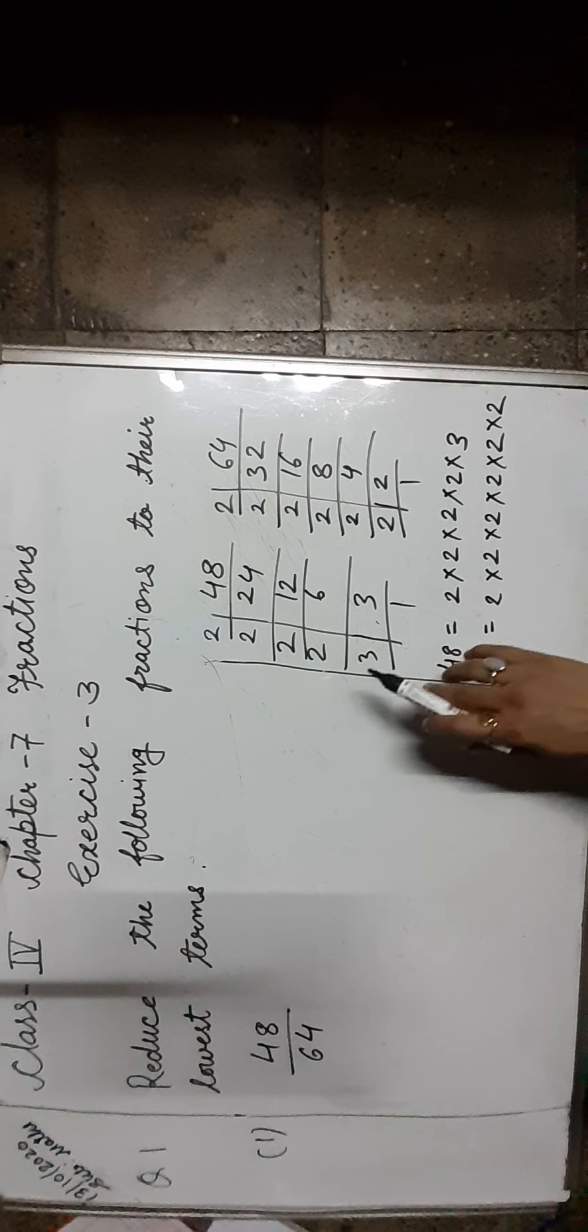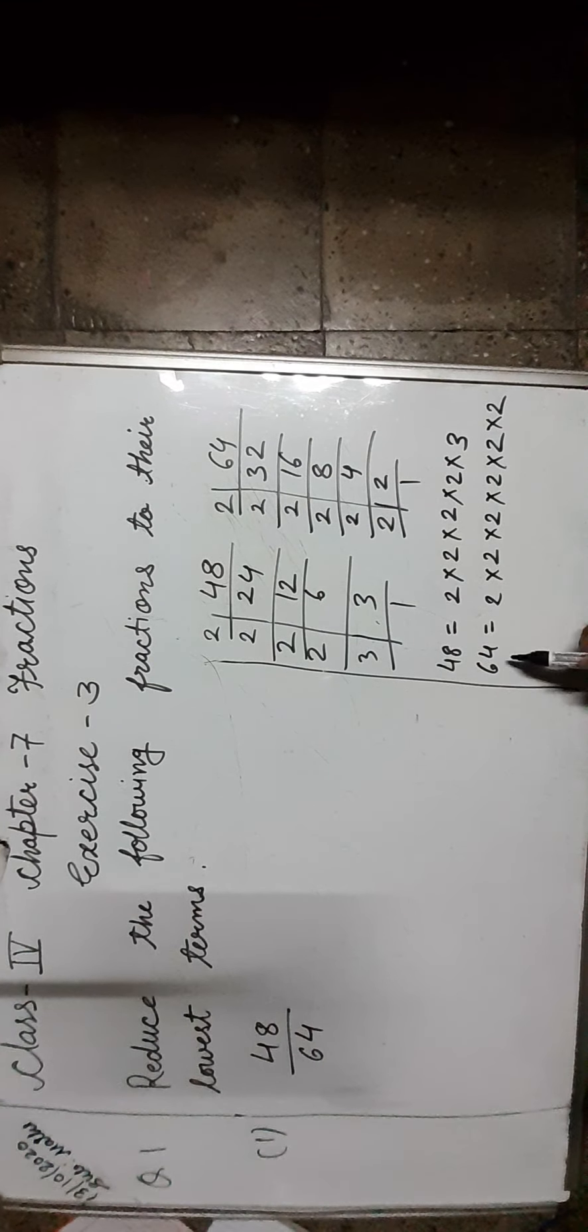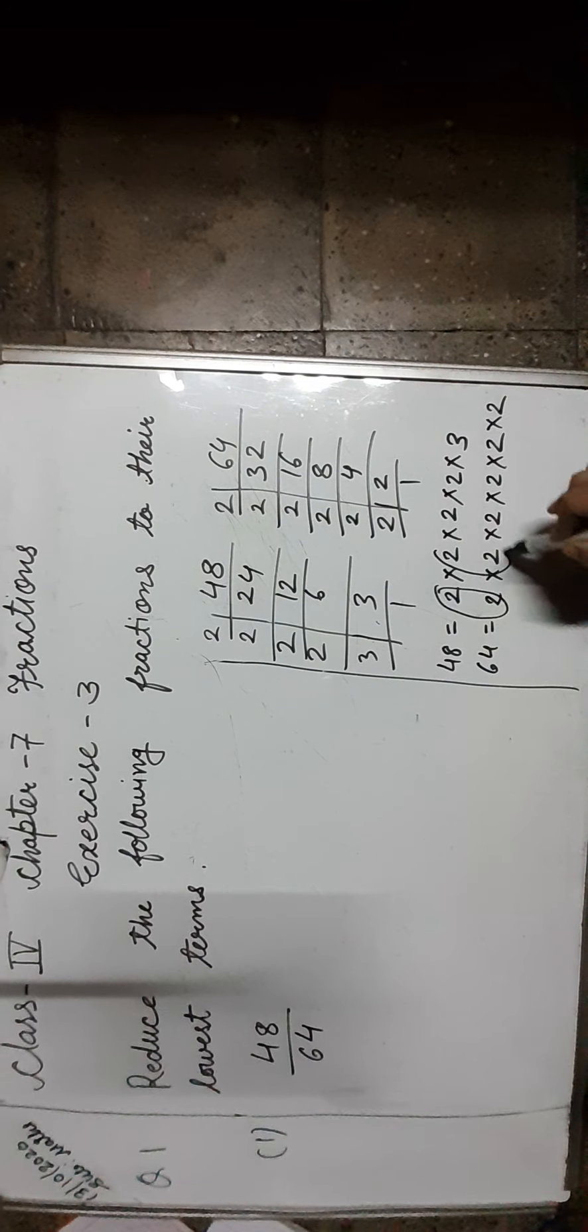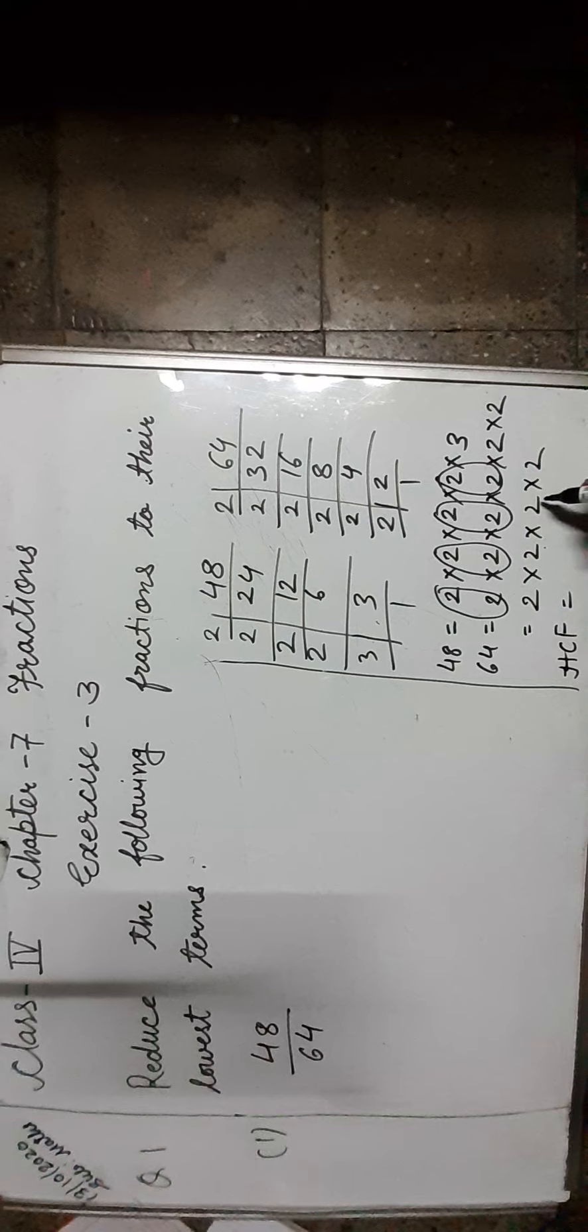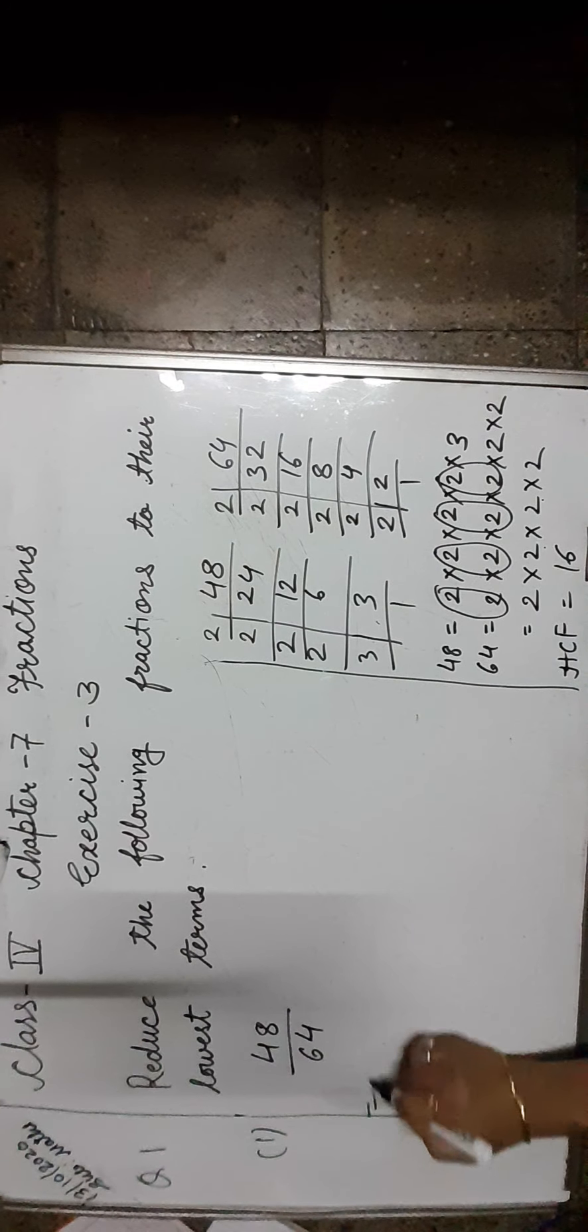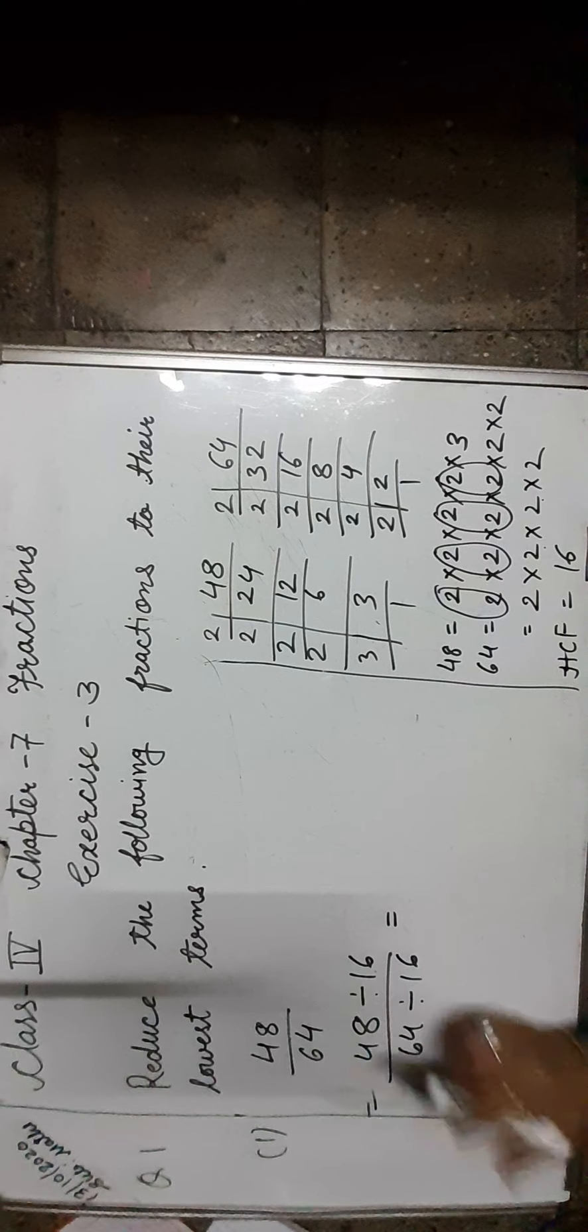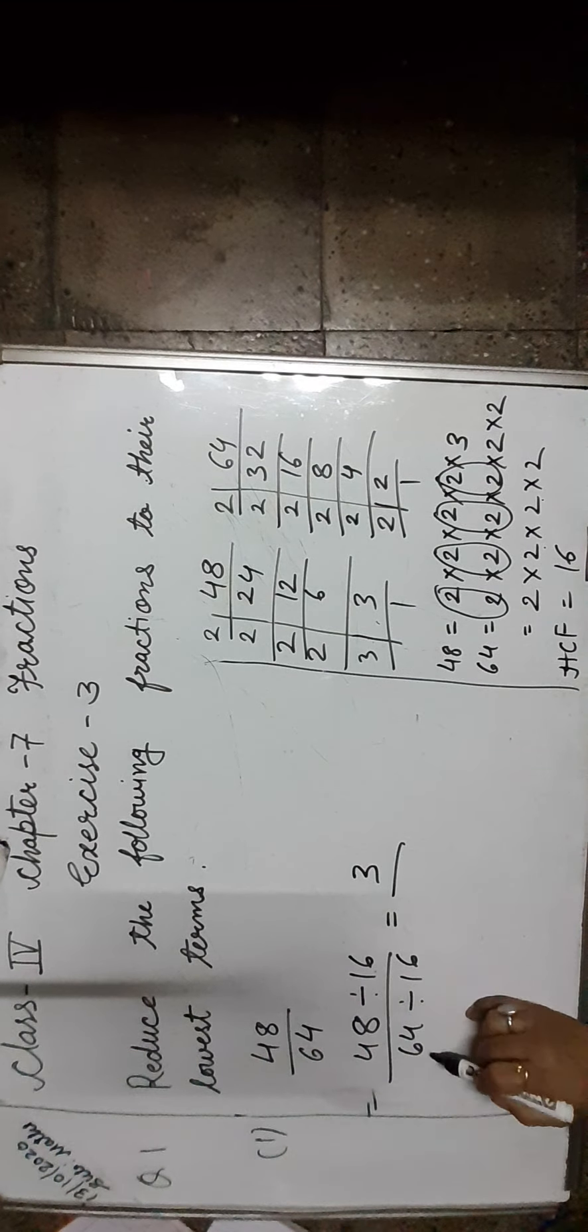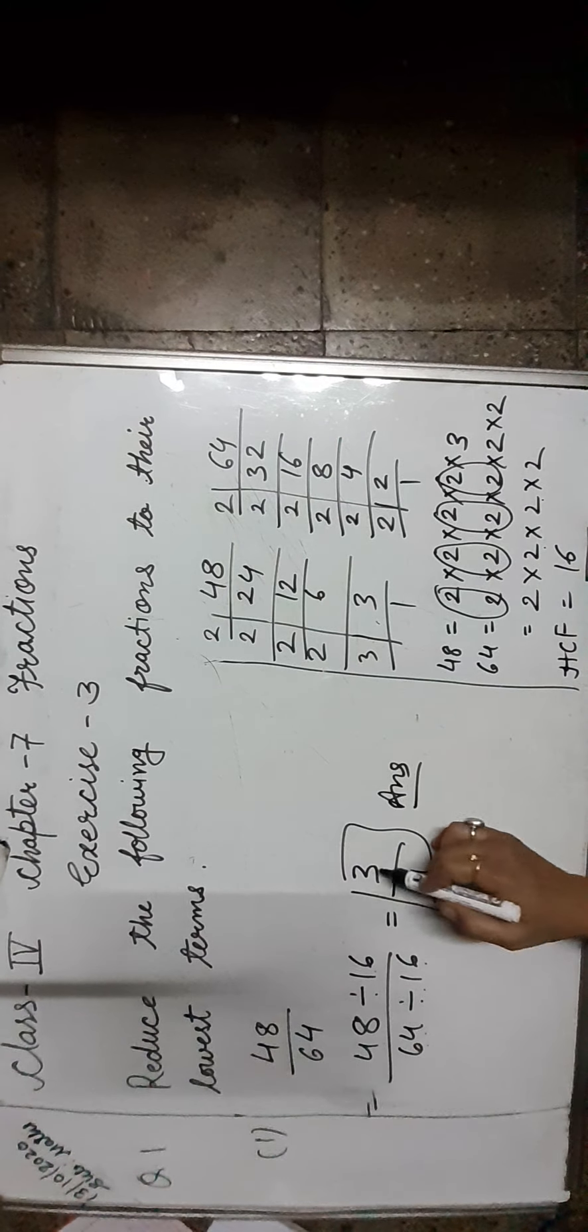First we find the HCF of 48 and 64 as we learnt in previous lesson. Find the common factors of 48 and 64: 2, 2, 2, and 2. It means 2 into 2 into 2 into 2. So HCF is equal to 2 to the 4, which is 16. HCF of 48 and 64 is 16. Dividing both 48 and 64 by 16: 48 divided by 16 equals 3, and 64 divided by 16 equals 4. So the answer is 3 upon 4.